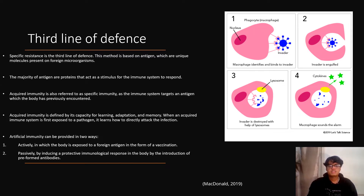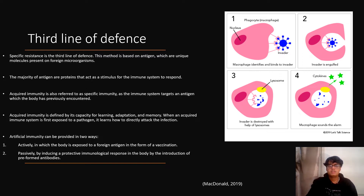Acquired immunity is defined by its capacity for learning, adaptation, and memory. When an acquired immune system is first exposed to a pathogen, it learns how to directly attack the infection. As a result, the acquired immune response is initially ineffective against a pathogen it has not faced previously. Conversely, once the acquired immune system produces a reaction, a protective response can be generated rapidly, allowing the body to protect itself from harm.